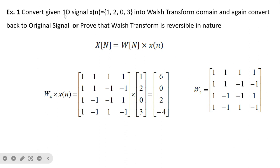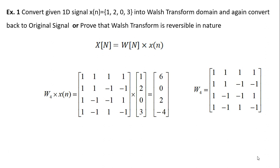Problem: convert a given one-dimensional signal into the Walsh transform and convert back to the original signal, or prove that Walsh transform is reversible. For the forward direction, X(n) = W(n) · x(n). Since the signal length is 4, W4 is suitable. We write the signal as [1, 0, 3] arranged as a column vector for matrix multiplication, and when we multiply this matrix we get the result [6, 0, 2, -4].